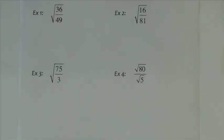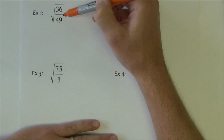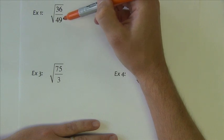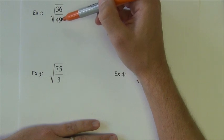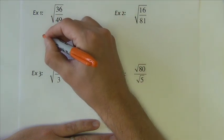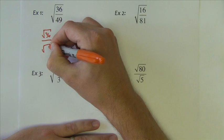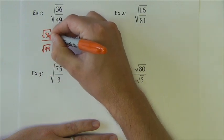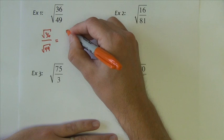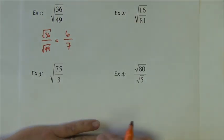Now generally speaking, whenever I have a fraction under a radical, the first thing I look for is are either of the numbers underneath the radical perfect squares? Because if they are, then it's best to just split up the fraction and take the square root of the number or numbers. And that's exactly what I'm going to do in this one. I split this up using quotient property. The square root of 36 divided by the square root of 49. And then I just take the square roots of these numbers. 36 becomes 6, 49 becomes 7. That's the answer, 6 sevenths.